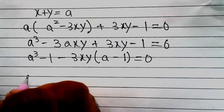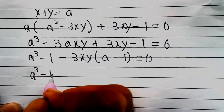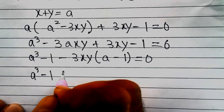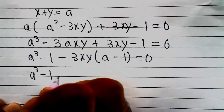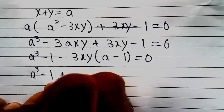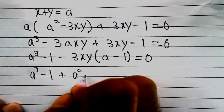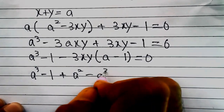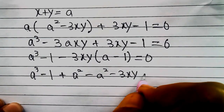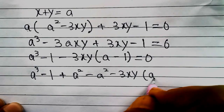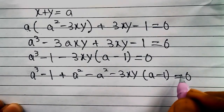In the next step, we write a³ - 1 and add and subtract a² to help factor: a³ - a² + a² - 1 - 3xy(a - 1) = 0.